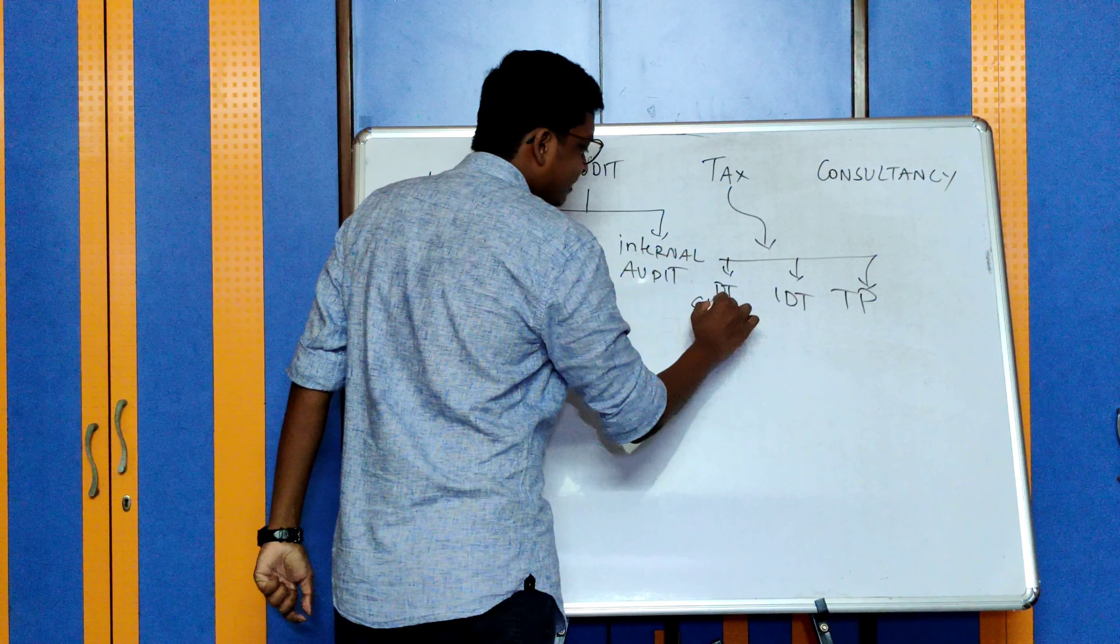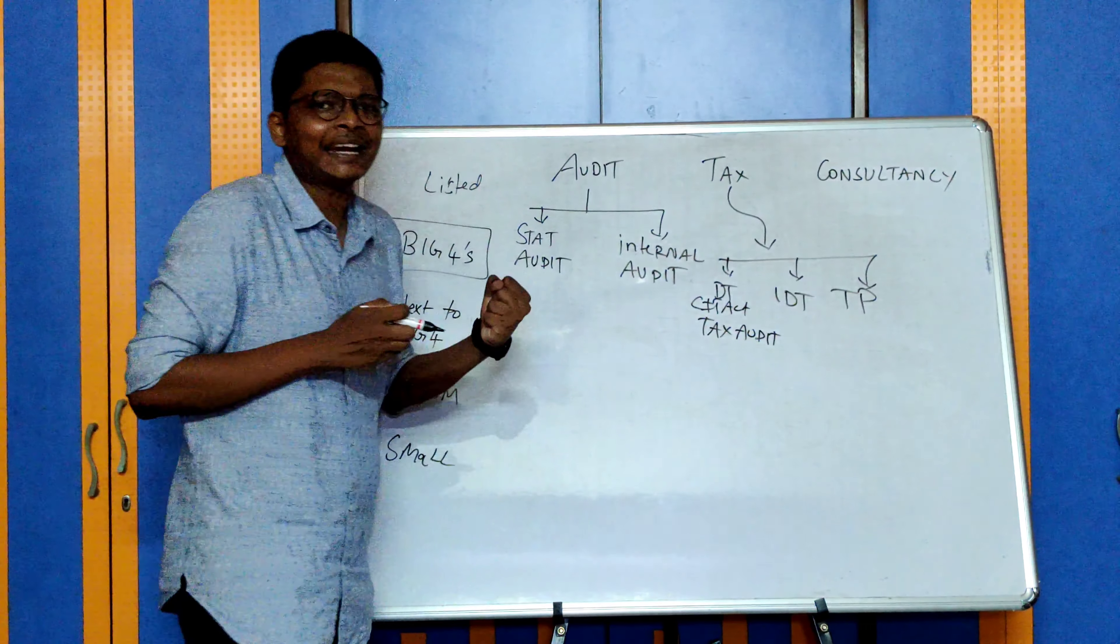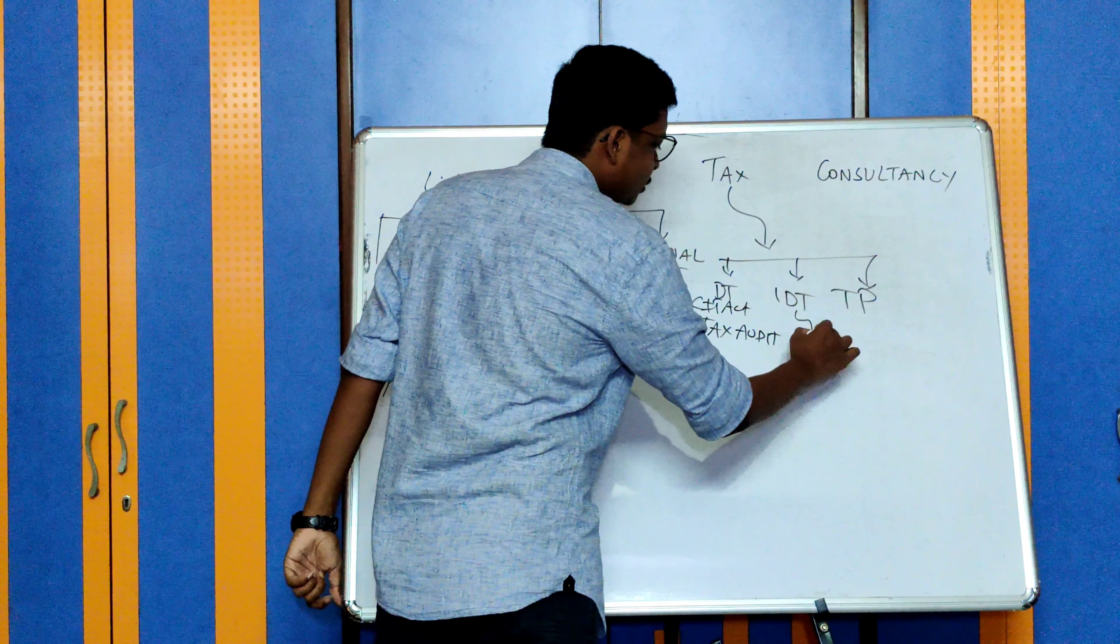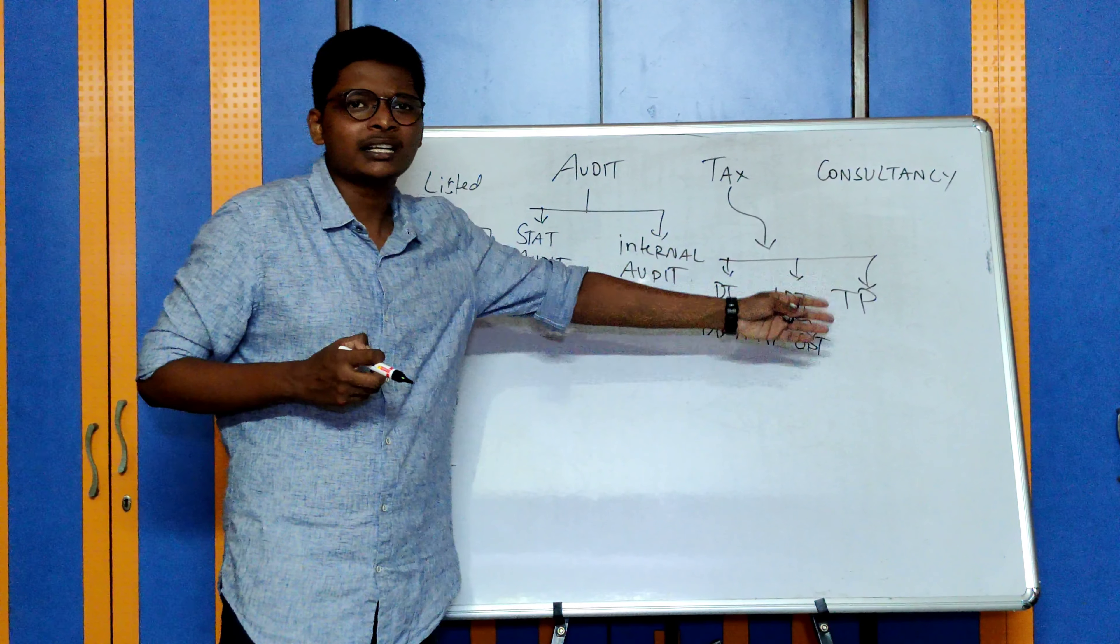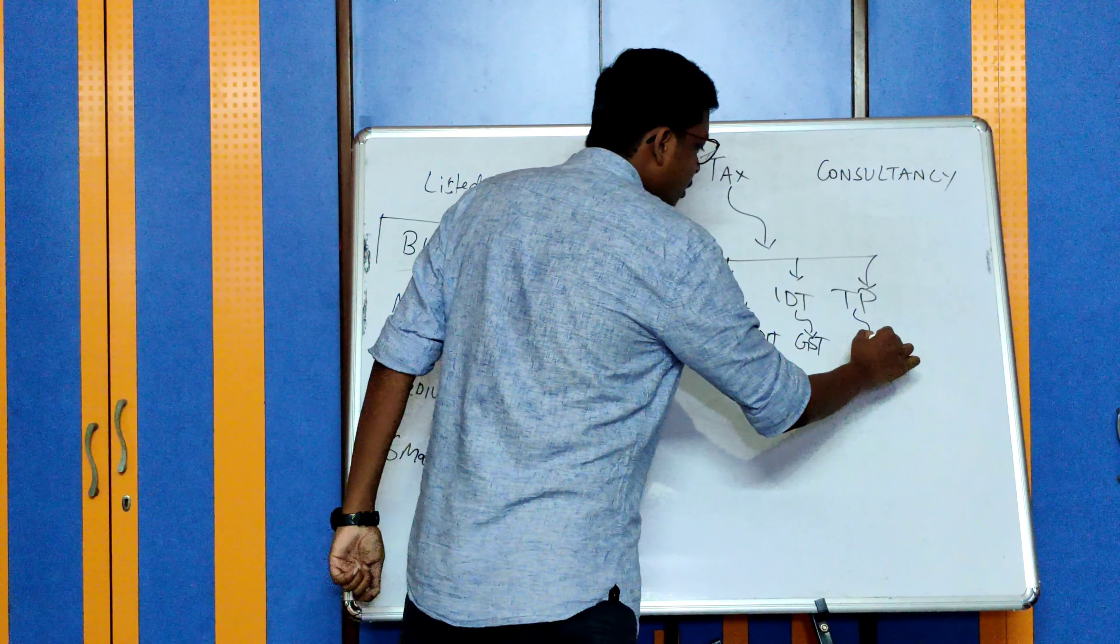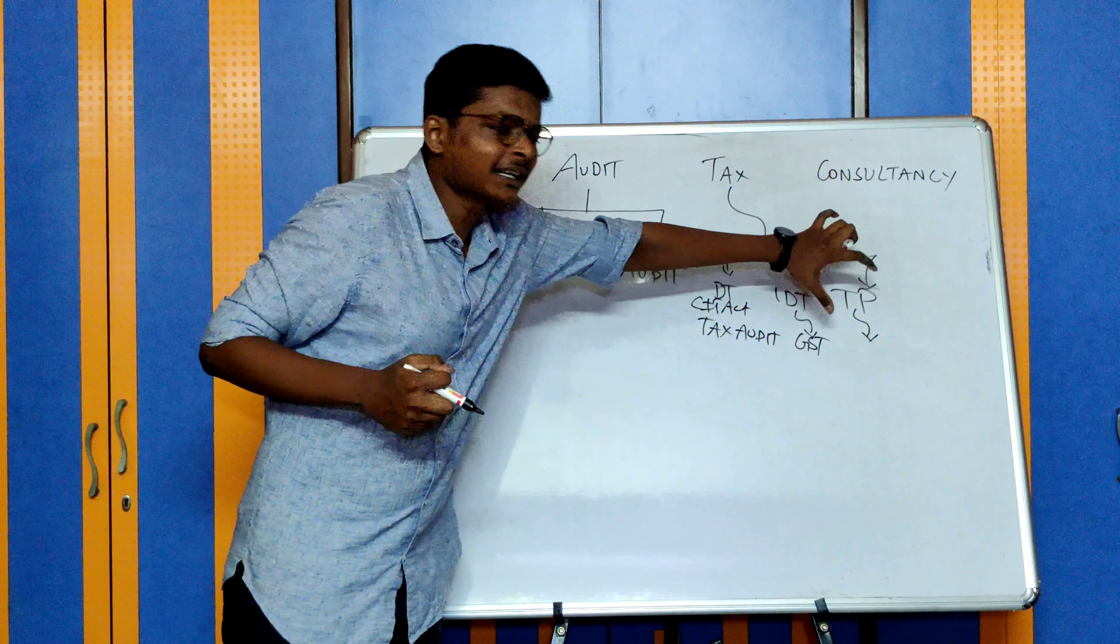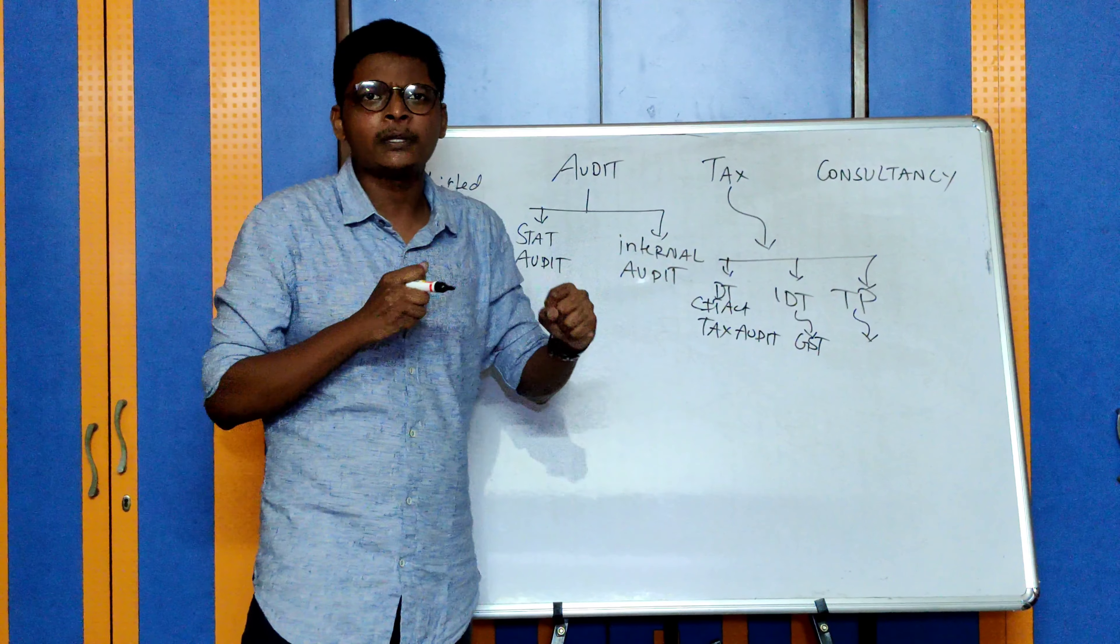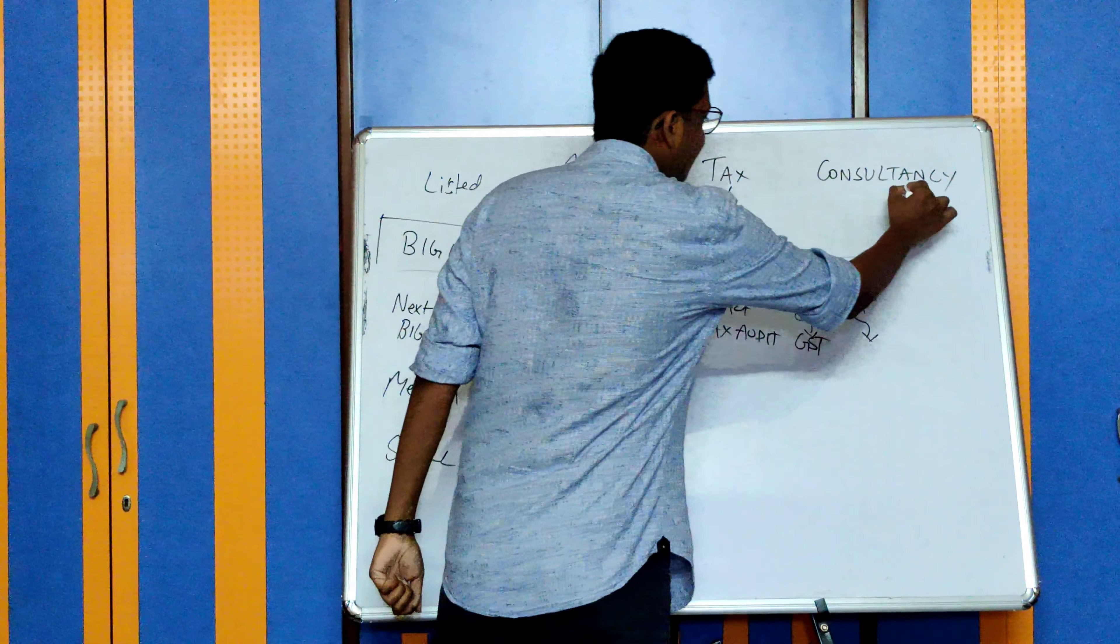For example, tax audits, any requirement under income tax, direct tax related work, assessment, appeals, etc. Similarly in indirect tax, you will be doing GST related work, customs, GST returns, GST audit, appeals, assessment cases. In transfer pricing, you will be computing the arm's length price, preparing and submitting a report. Majorly in transfer pricing, you will be seeing multinational companies and big corporates because transfer pricing is generally not applicable to small companies.